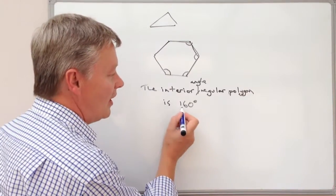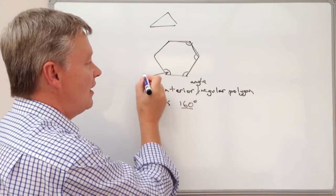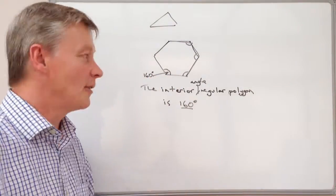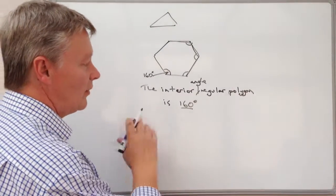Well in other words what they're saying is that that 160 is this bit in here. Now it isn't for a hexagon but let's have a look at the way that we can work this out.